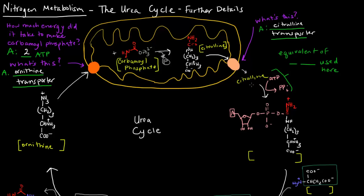Once that citrulline is out in the cytosol, we're going to use an ATP, turn it into a pyrophosphate, so that the equivalent of two ATP is used there. That's in this step here, and we're going to create this molecule here.